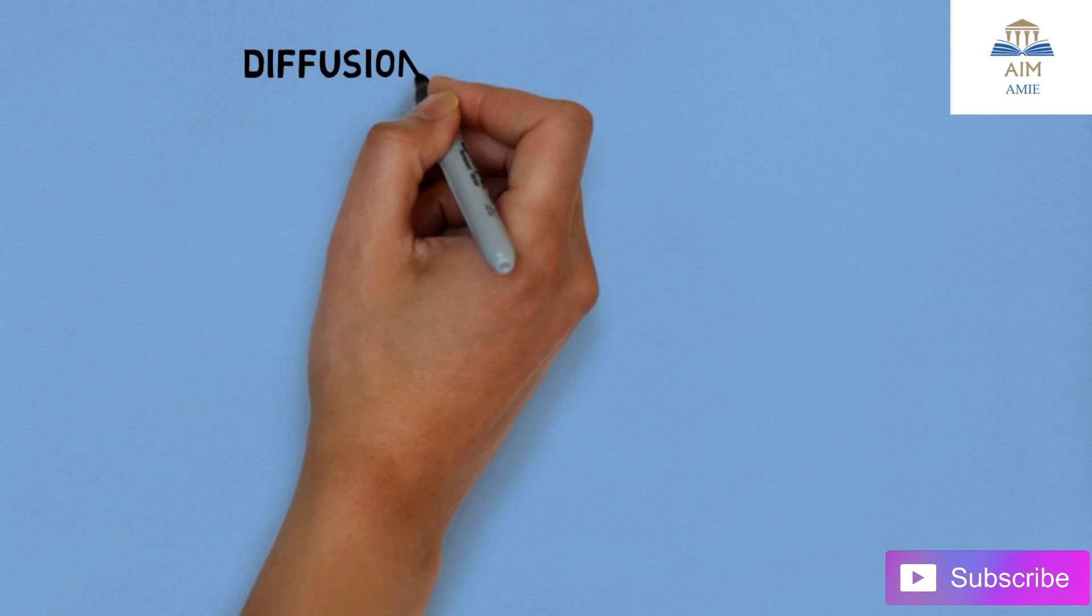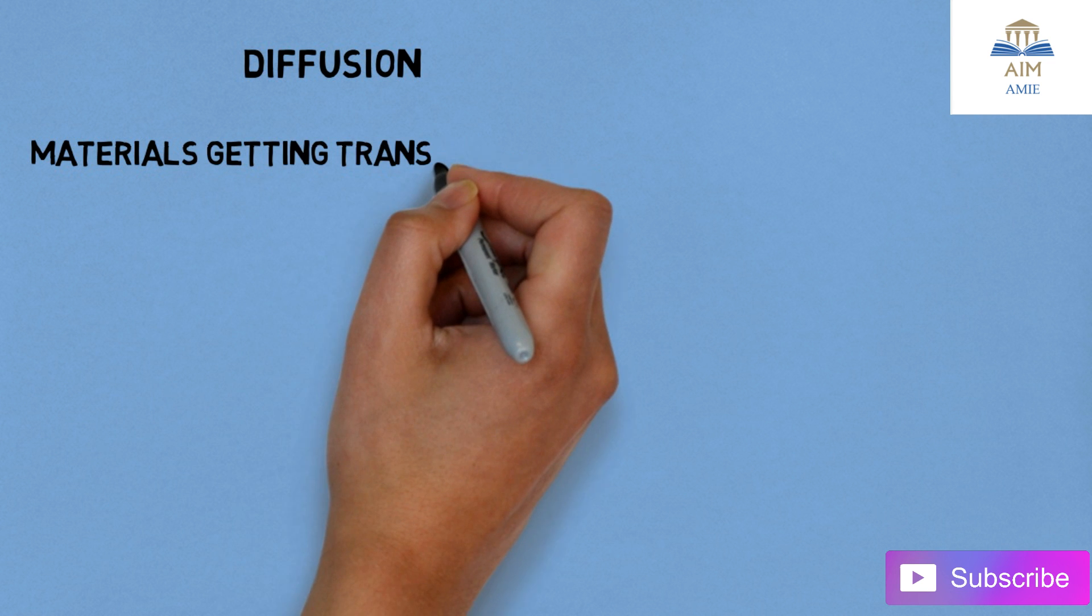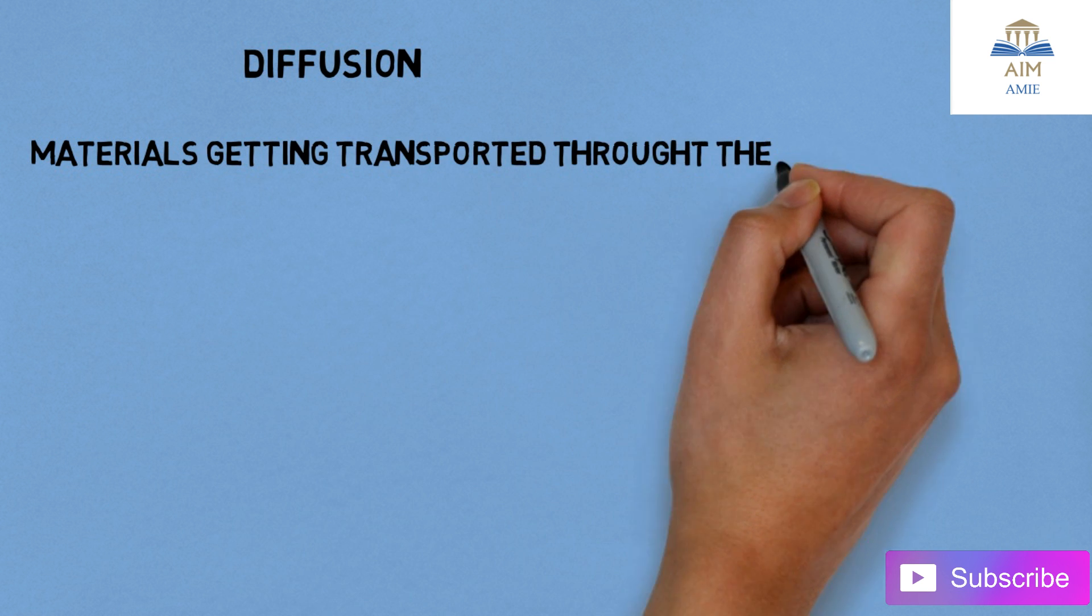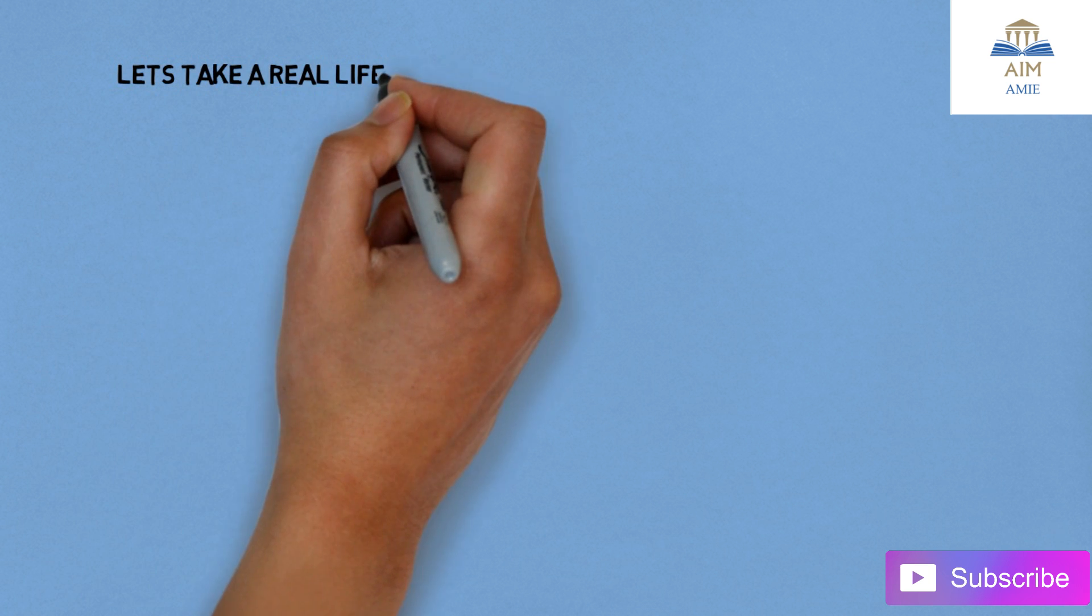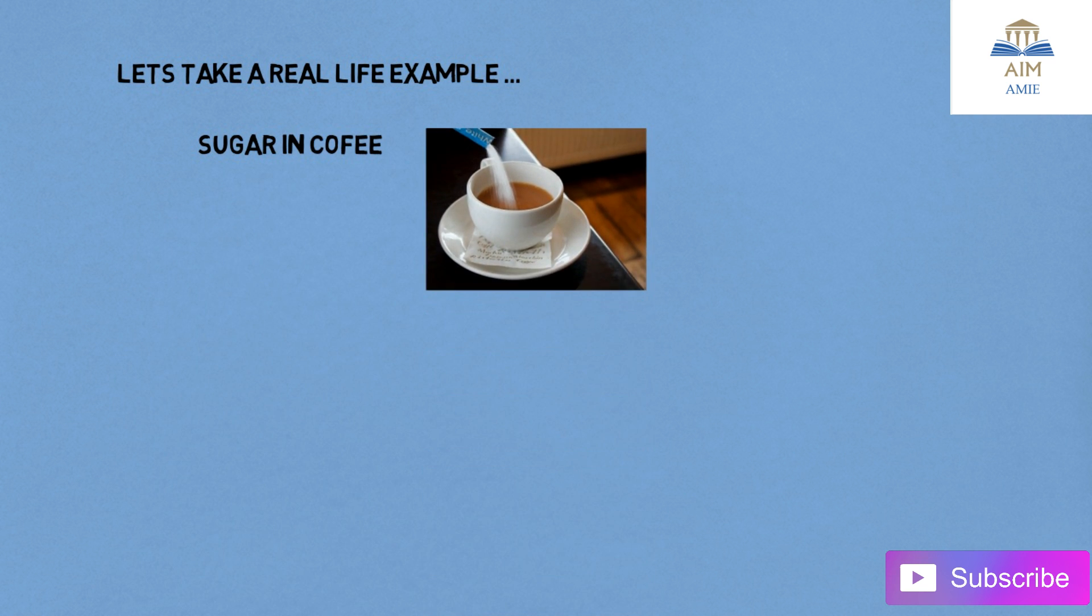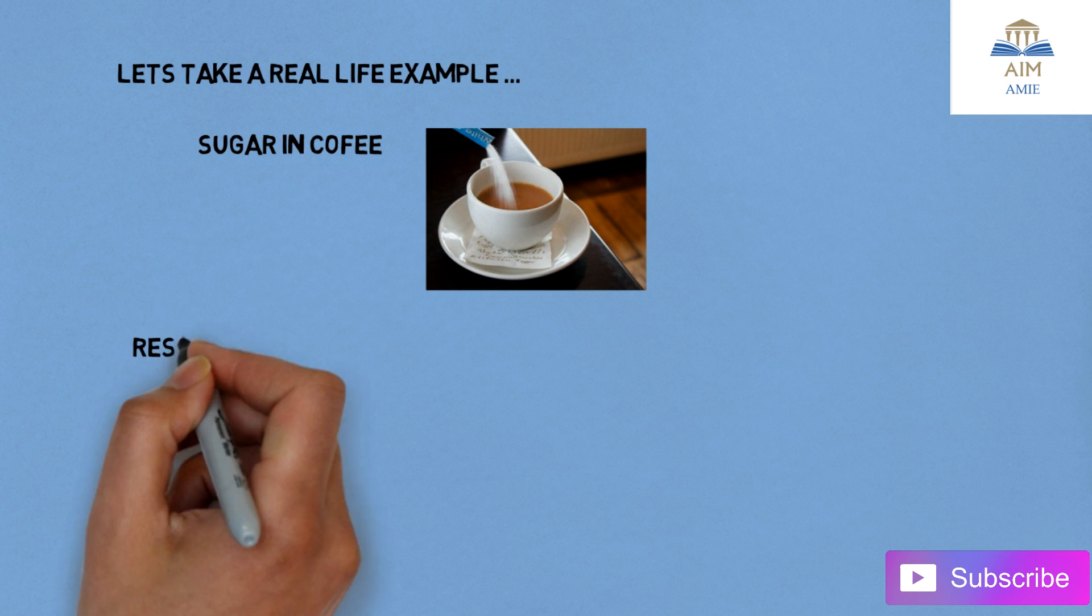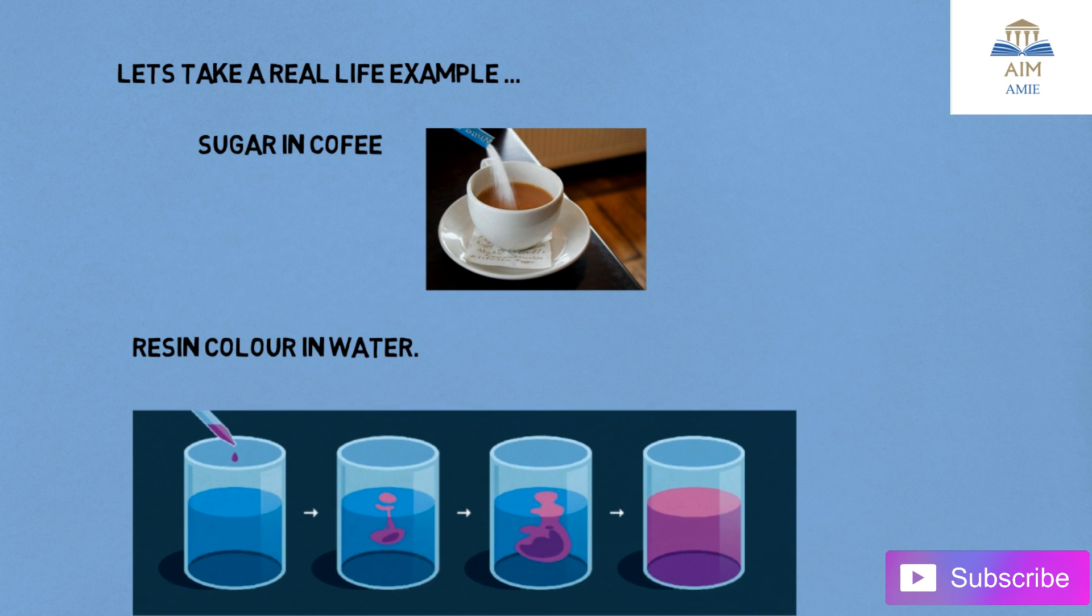Diffusion means materials are getting transported throughout the matter. Let's take a real life example: sugar in coffee. If you add sugar in coffee, the sugar gets dissolved and diffused in the coffee.